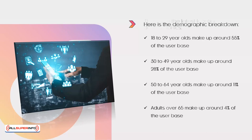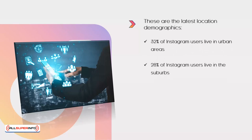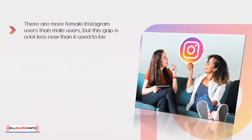Here are the latest location demographics: 32% of Instagram users live in urban areas, 28% live in the suburbs, and 18% live in the country. There are more female Instagram users than male users, though this gap is much less than it used to be. It is predicted that a lot more adults in their 30s will be using Instagram in the near future, just as happened with Facebook.